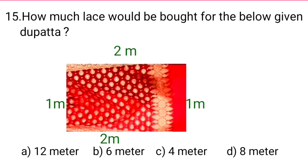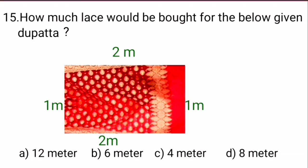Question number 15 is, how much lace would be bought for the below given dupatta? Dear students, to calculate the lace required for given dupatta, we have to find the sum of all the sides of this dupatta. And what we call the sum of all the sides? Yes, perimeter. So students, we will find the perimeter of this dupatta by adding length of all its sides. So let's add.